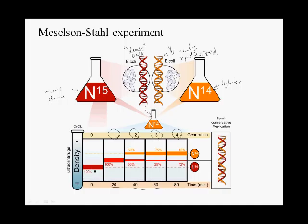At zero time — cells grown only in nitrogen-15 — the uniformly N-15 labeled DNA bands at the high-density position. Cells that have replicated their DNA exactly once in nitrogen-14 medium show DNA of intermediate density — distinctly lighter and lower density than all-N-15 labeled DNA.